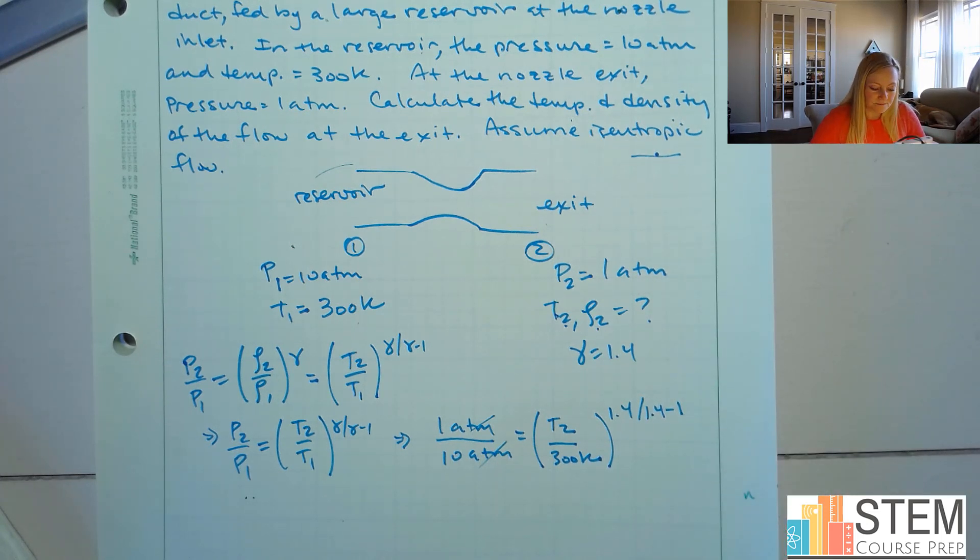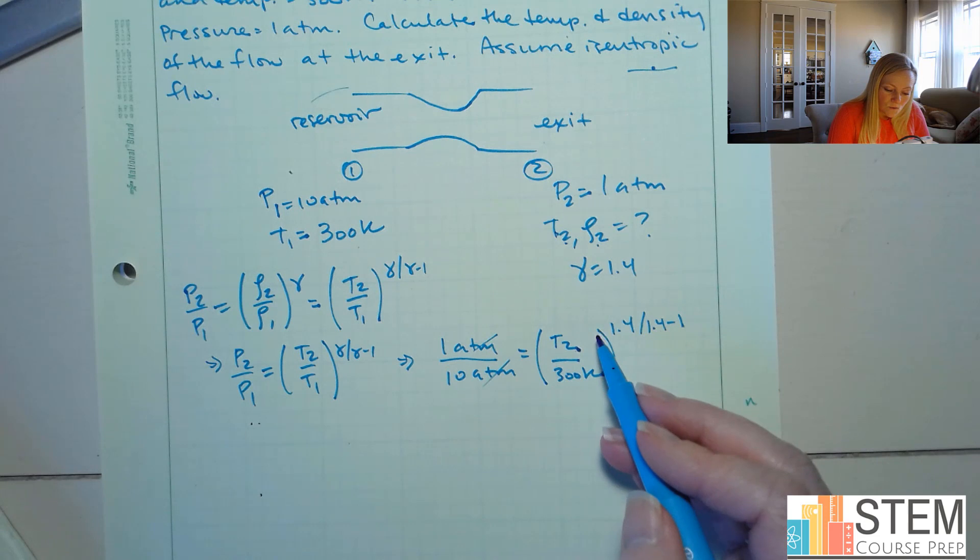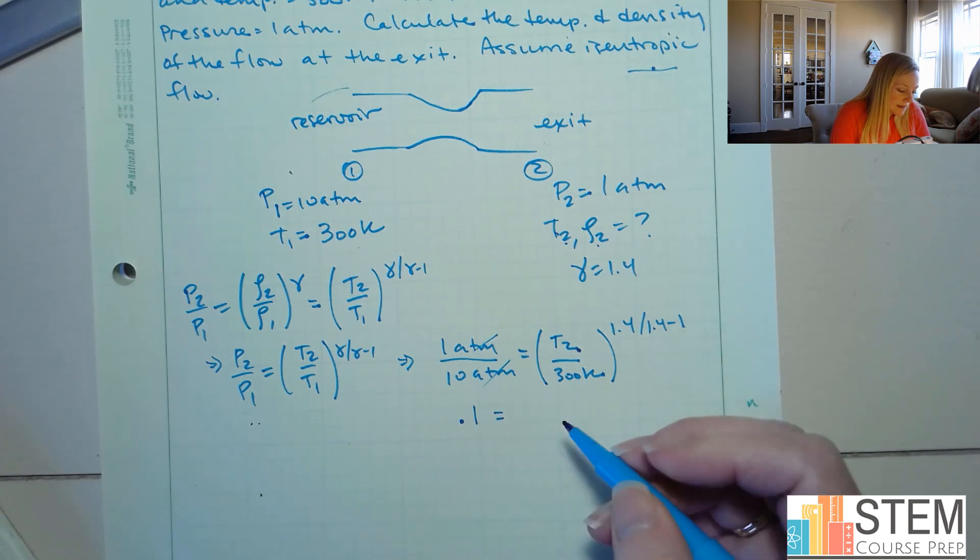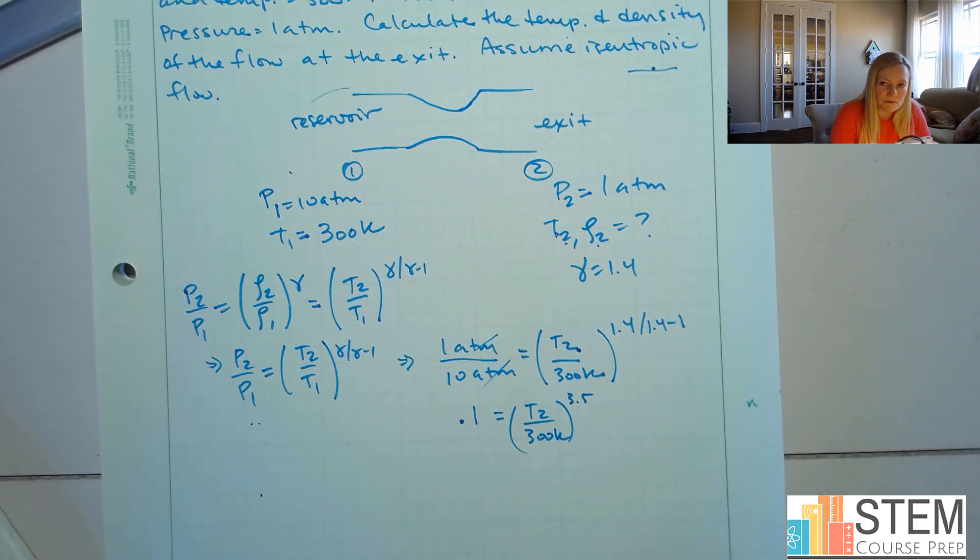Okay, and now we need to solve for T2. All right, so this is just a little bit of algebra now at this point. So if we look at that, what we're going to end up with is this is 0.1. Those units cancel, and then I've got T2 over 300. This ends up being 3.5.